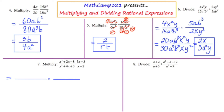Top left: x squared plus 2x minus 8 factors to (x + 4)(x − 2). In the denominator of that same fraction, x squared plus 4x plus 3 factors to (x + 3)(x + 1). At this point there are no factors common to the top and the bottom of just the first fraction.